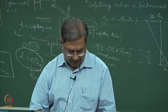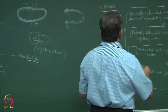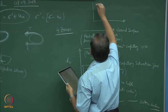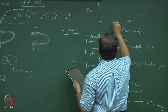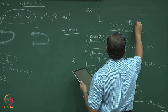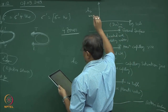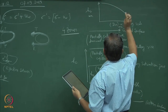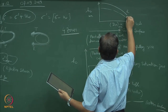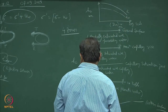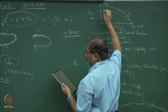Just to give you an idea of how much the capillary action could be: if I plot hc versus d10 on a log scale — both in millimeters — the first thing is that as d10 increases, hc will drop down. This is hc, and this is the line for hcs. For clays, the magnitude of hc would be 10 to the power 4 mm.